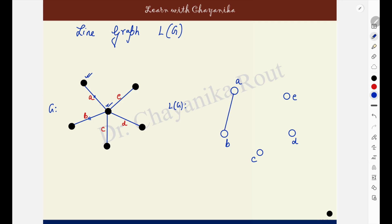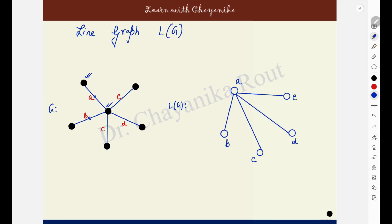The edge A is sharing its end point with C, so A and C will be made adjacent. The edge A is sharing its end point with D and E, so A and D will be made adjacent and also A and E will be made adjacent.